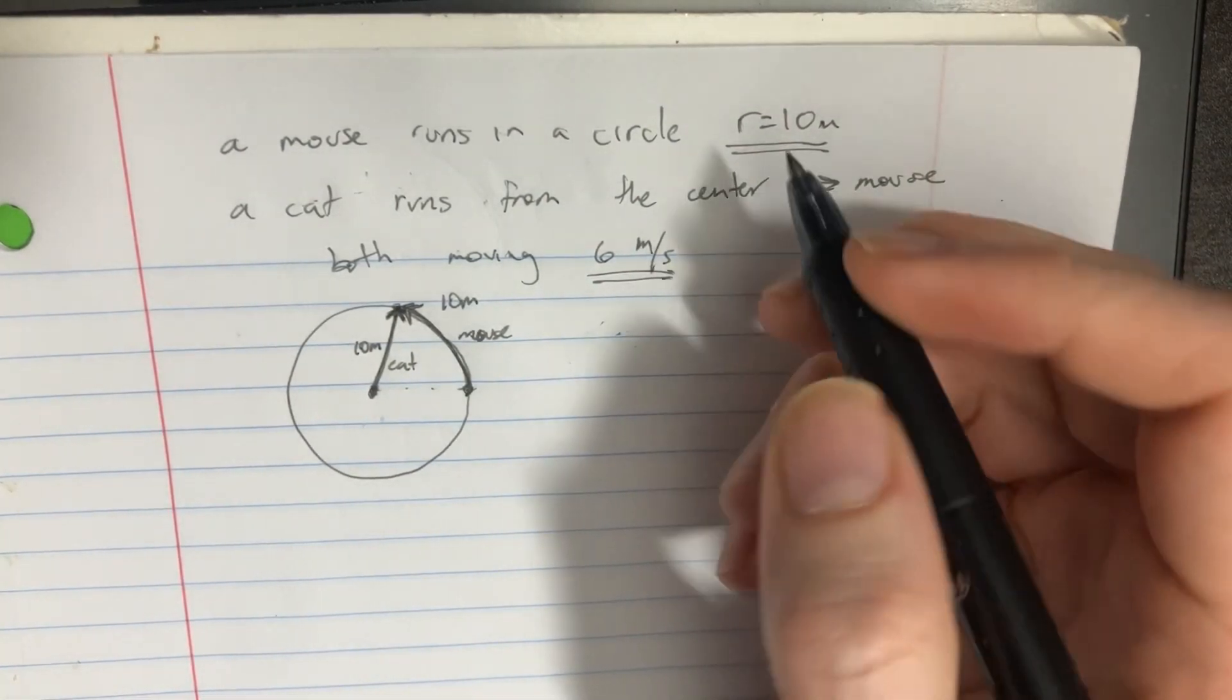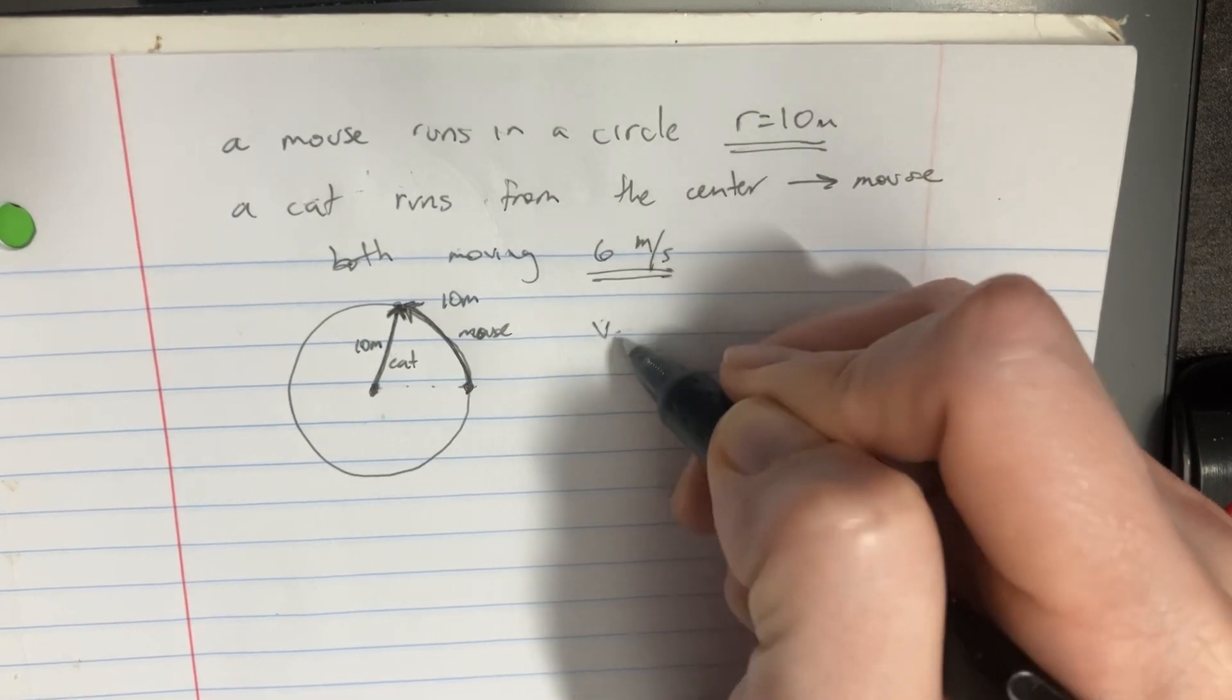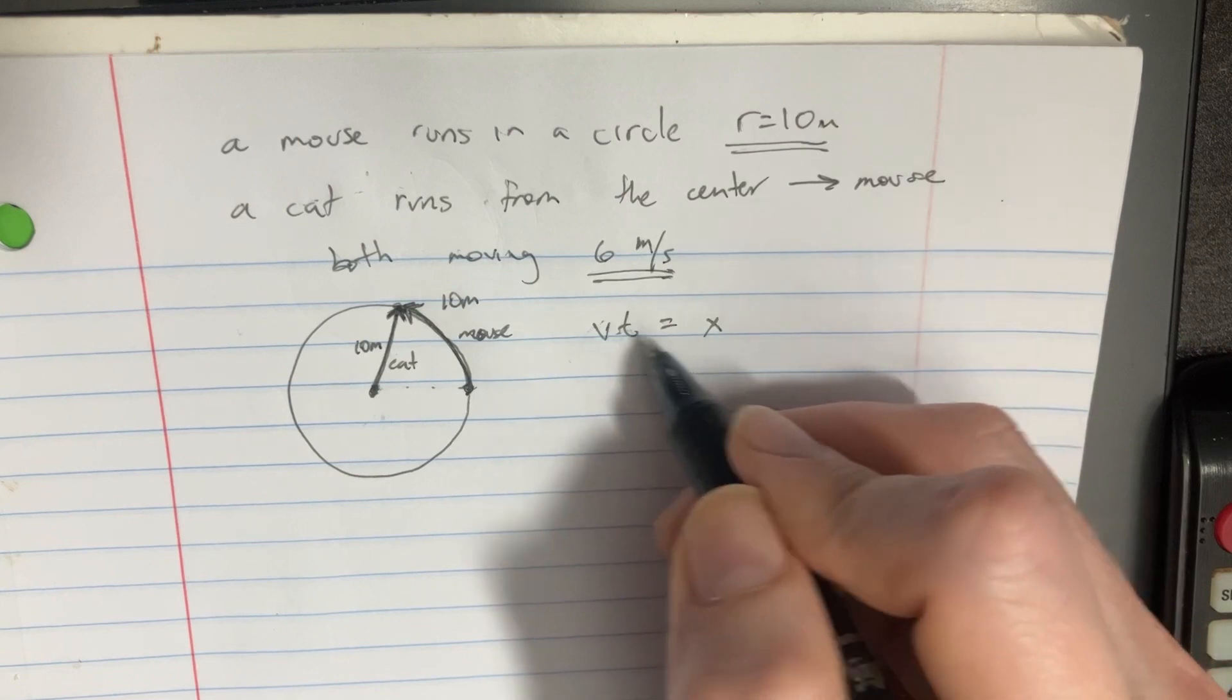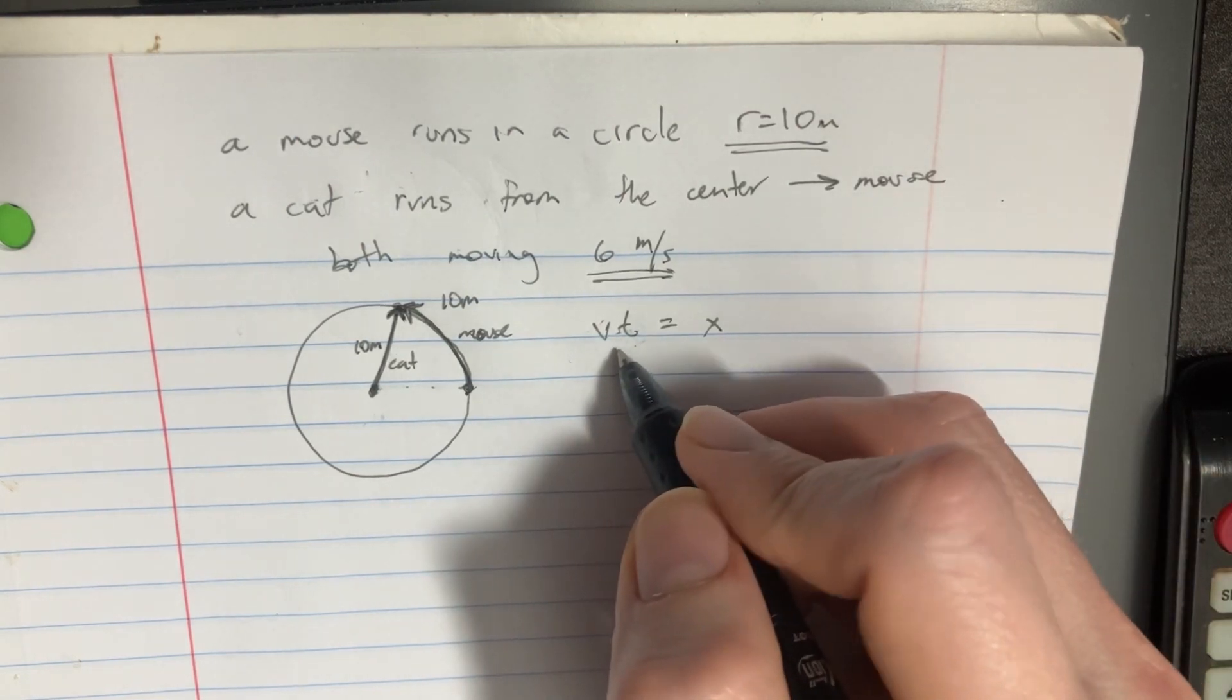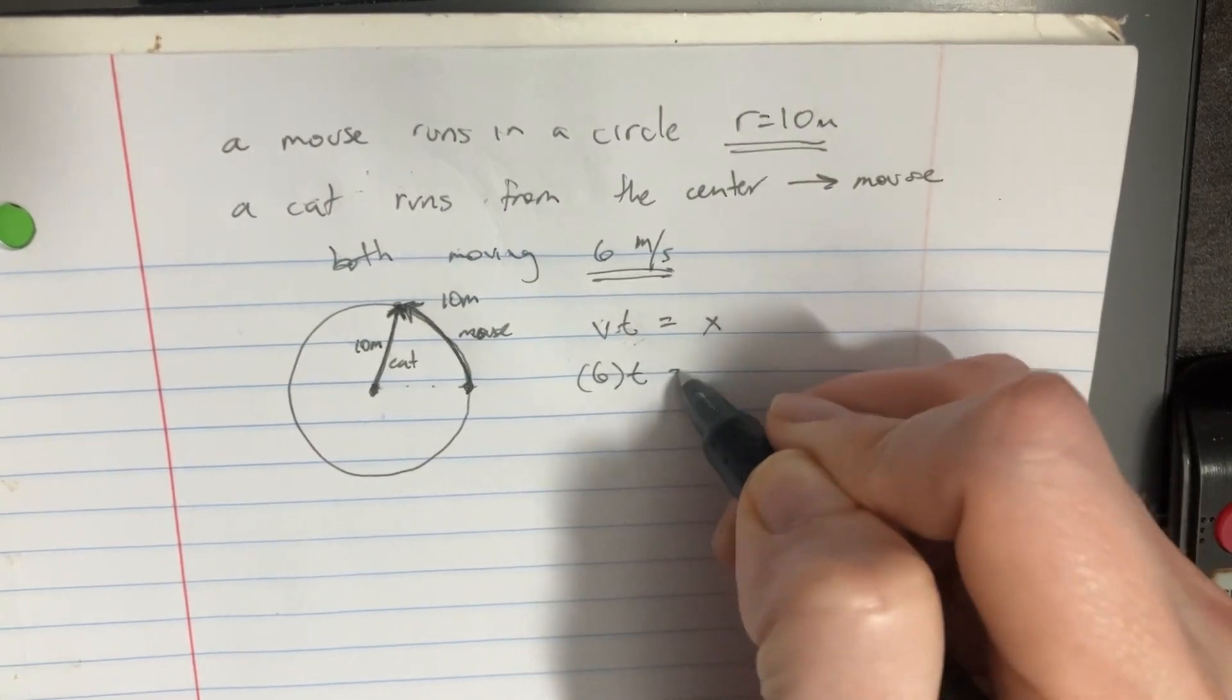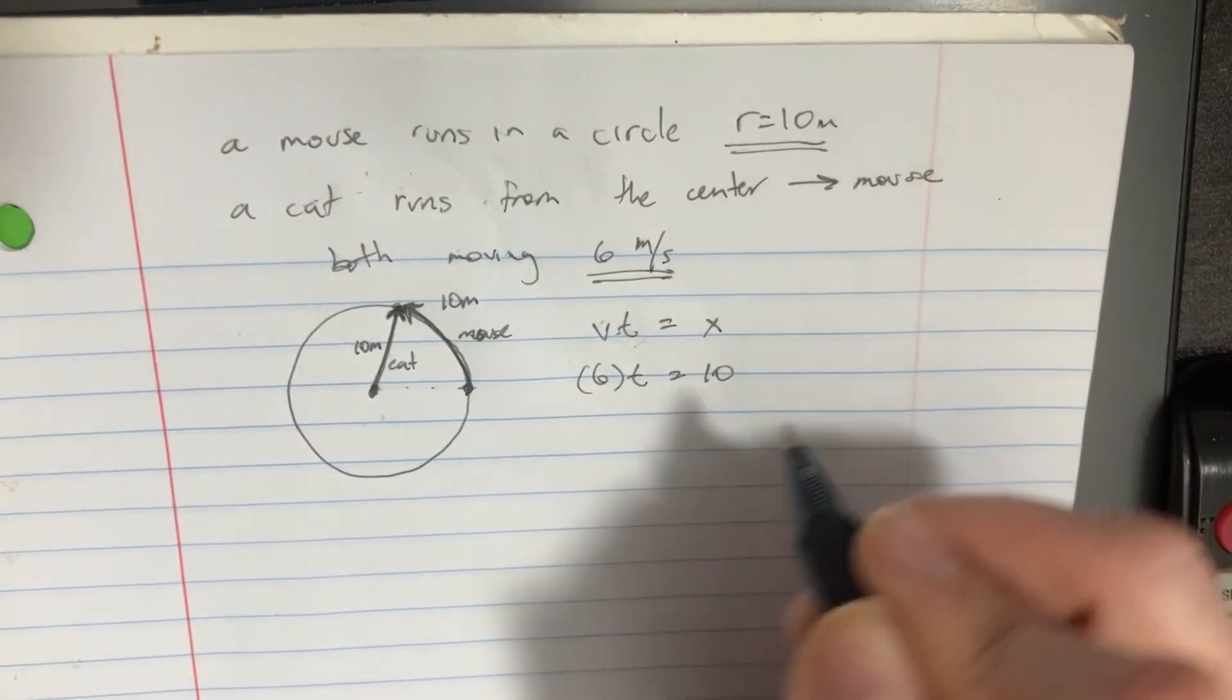And so we're going to ask ourselves, what's the distance if we have velocity times time? That'll give us the change in distance. And so we're going to say, what's the velocity? It's six. And how much time did it take? We don't know. But how far did they go? They went 10 meters.